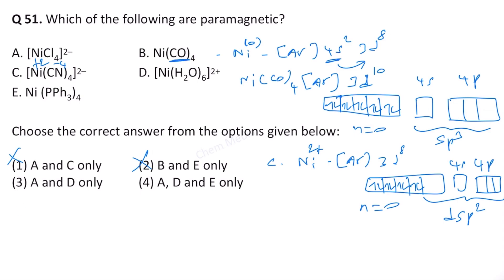With n = 0, complex C is also diamagnetic, meaning option 1 is also wrong. For complex D, water is a neutral ligand and therefore nickel is in the +2 oxidation state because on the outside we see 2+. This gives Ni²⁺ once again, with configuration argon and then 3d⁸.